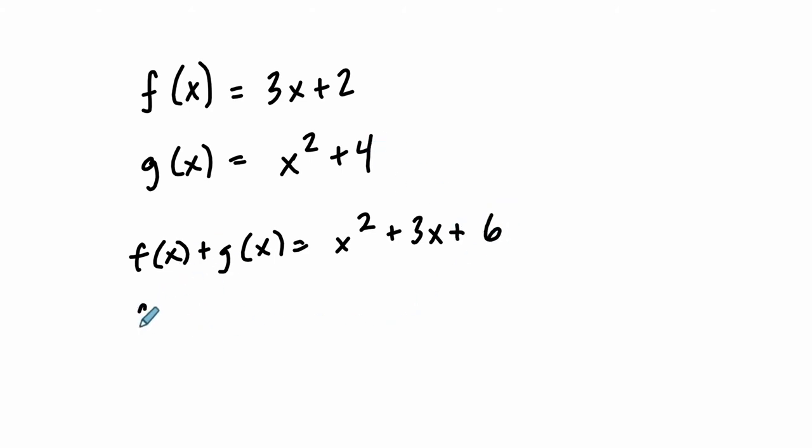If you were subtracting them, f of x minus g of x, that would equal 3x plus 2 minus the sum of x squared and 4, which would be negative x squared plus 3x minus 2.